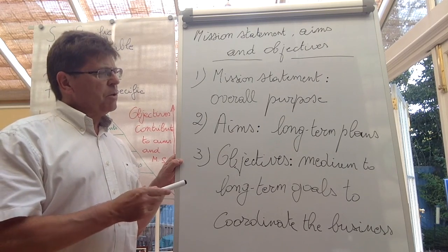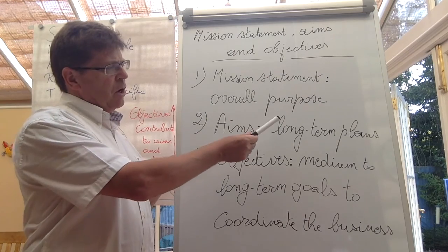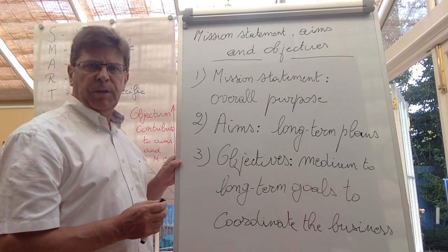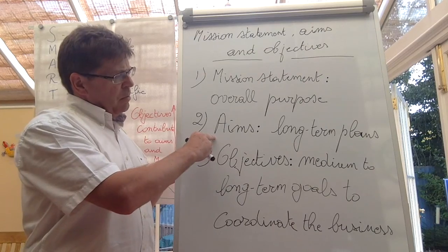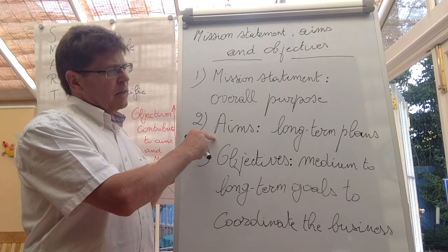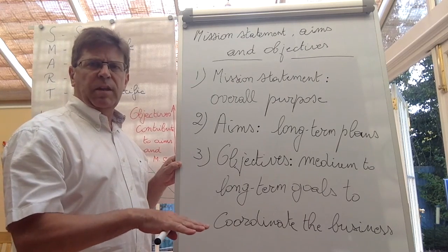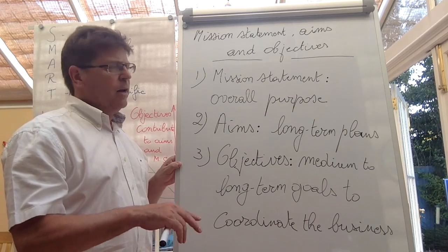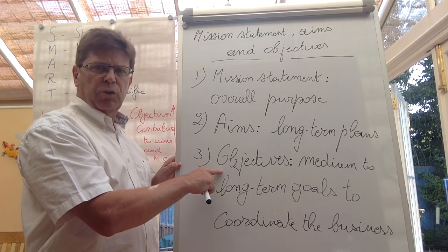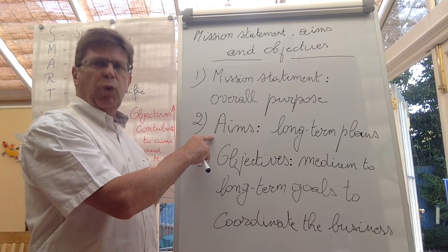From the mission statement we get to aims, or corporate aims. These are the long-term plans from which we ultimately derive the objectives of the company. Aims are put together by senior management and are long-term plans that help more junior people within the organization with decision-making, and provide support and guidance for the objectives of the company in the medium to long term. Corporate aims are qualitative statements, not quantitative statements.